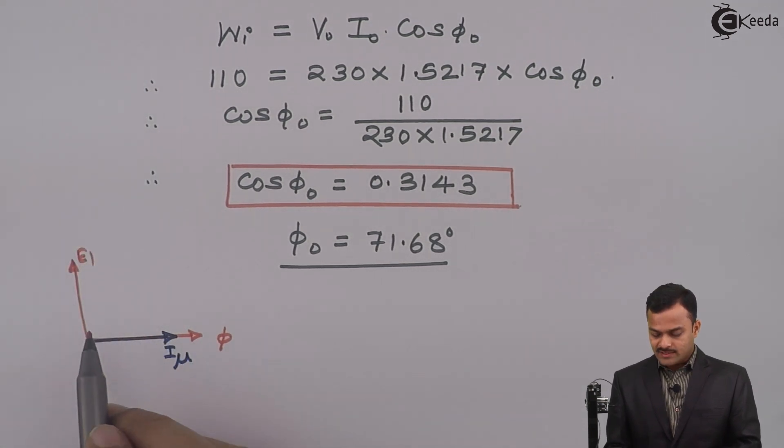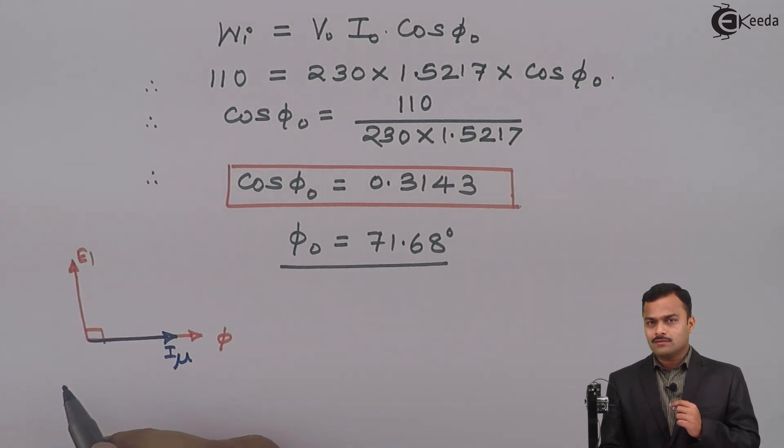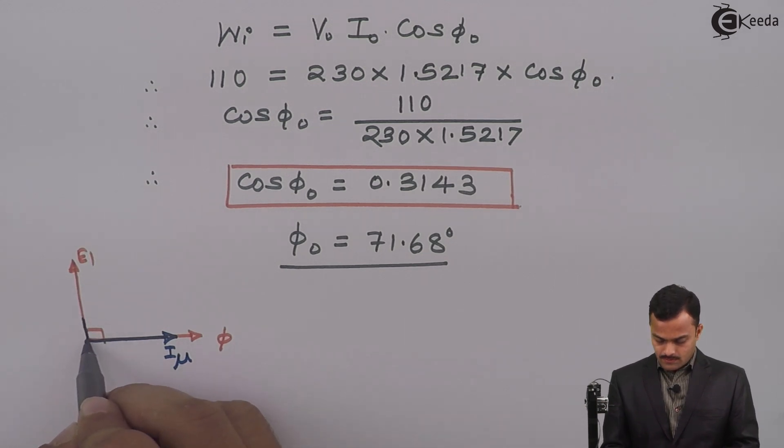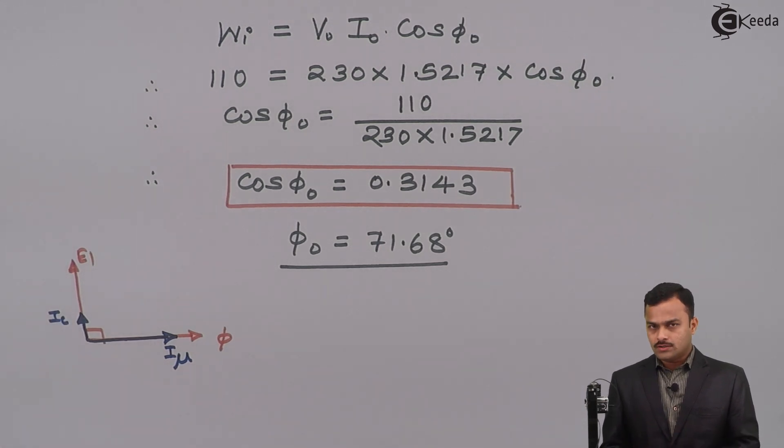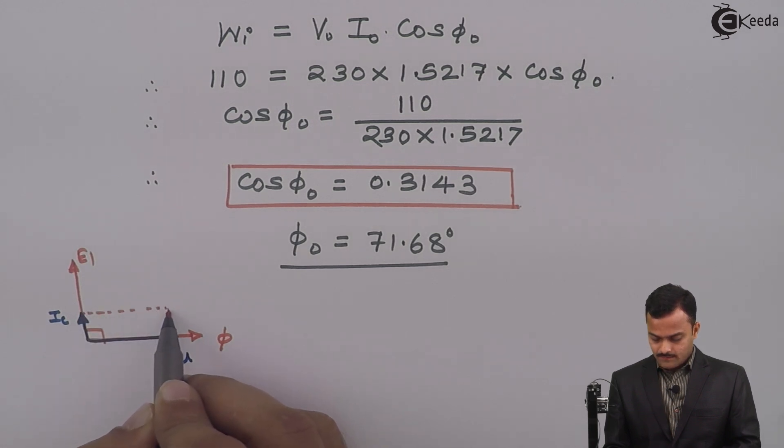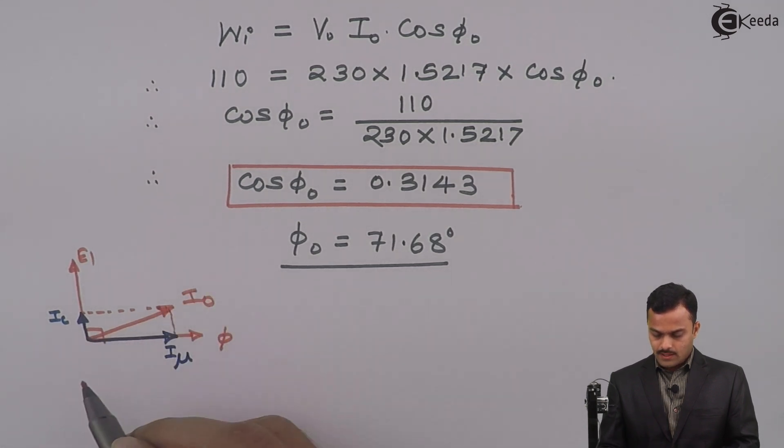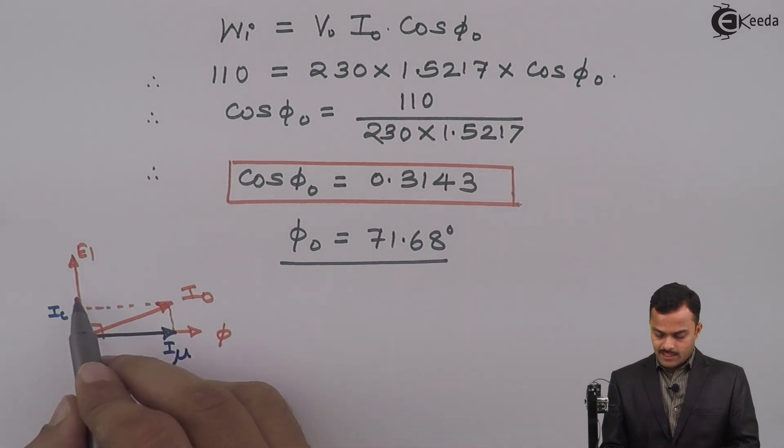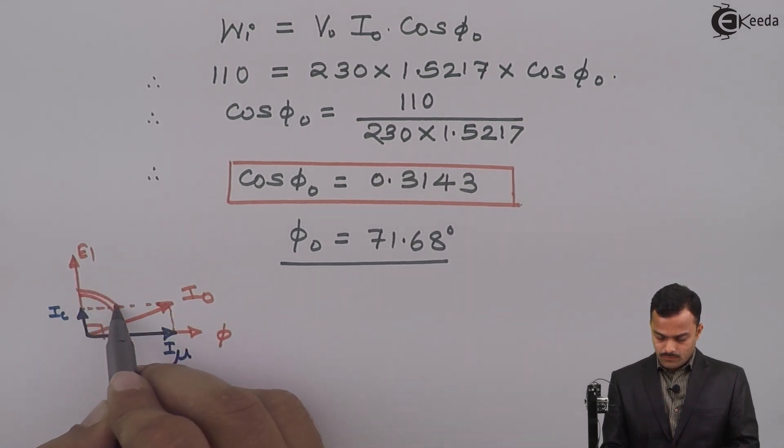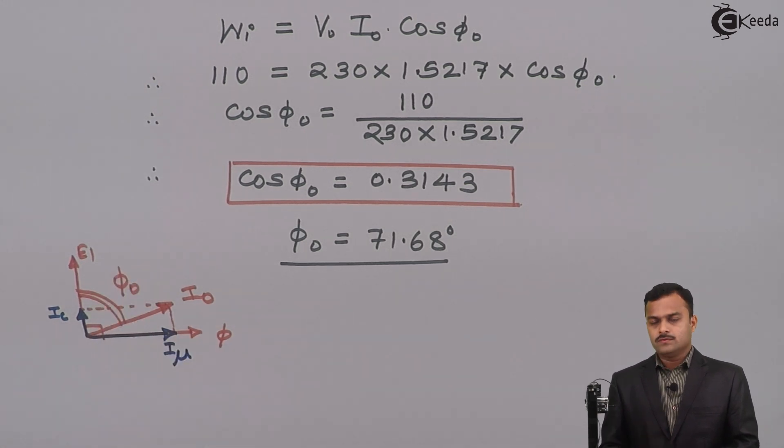which is leading this flux Φ by 90 degrees. Along with E₁ I will have one more current and that is I_c, the core loss component of no load primary current. So if I add this vectorially I will get no load primary current I₀, and the angle between E₁ and I₀ is φ₀. Why I have drawn this? Because we are supposed to calculate I_c and I_μ using I₀ and φ₀.